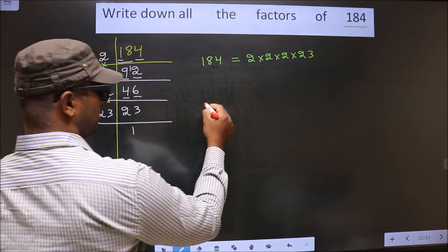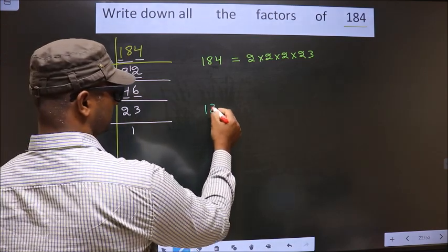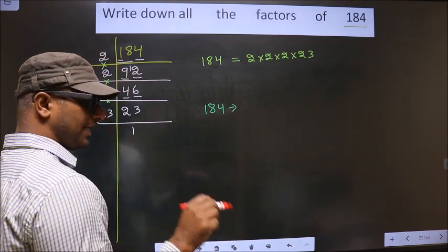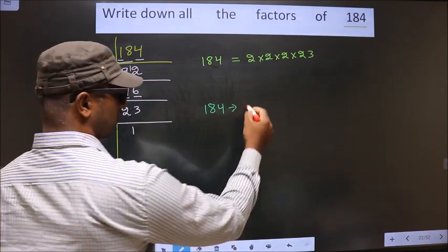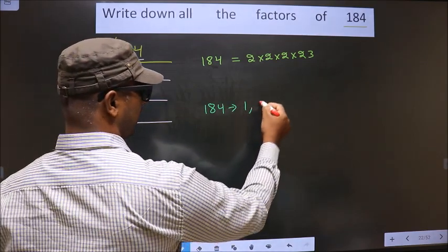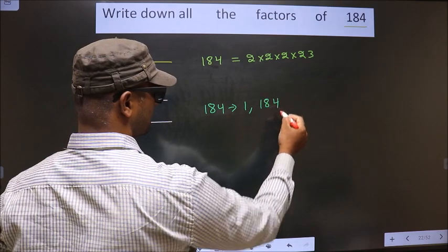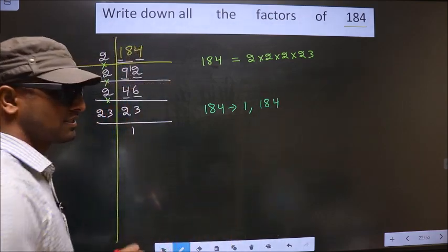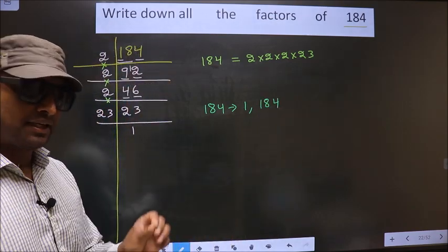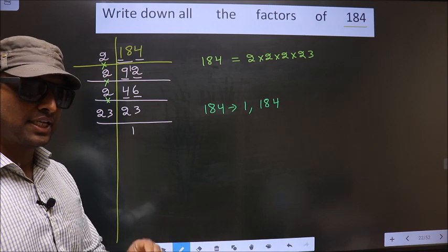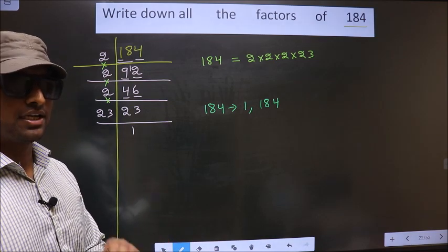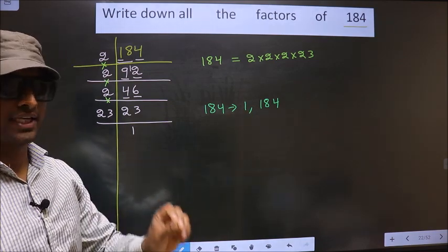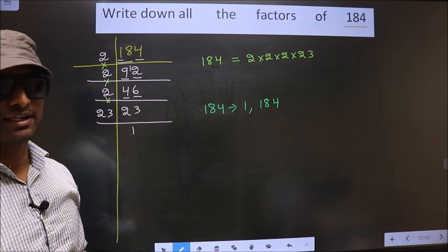Any number you take will definitely include 1 and the number itself in its factors. So 1 and 184 are factors of 184.